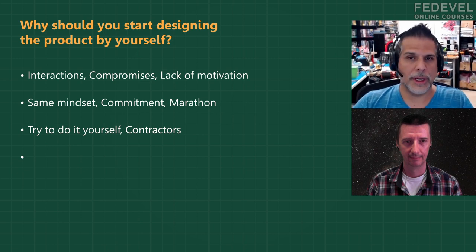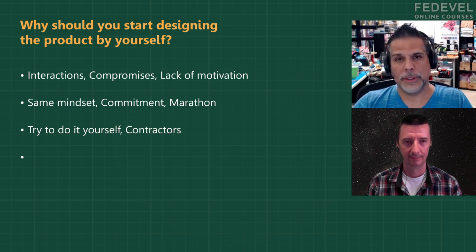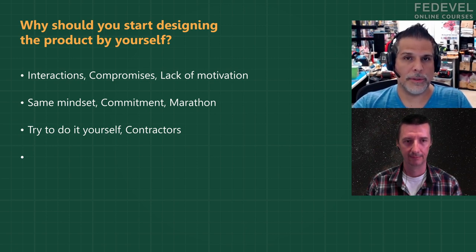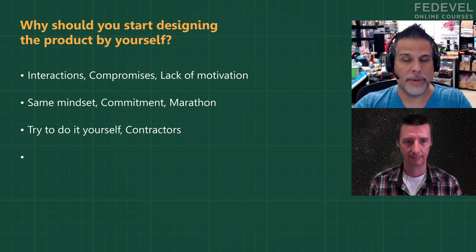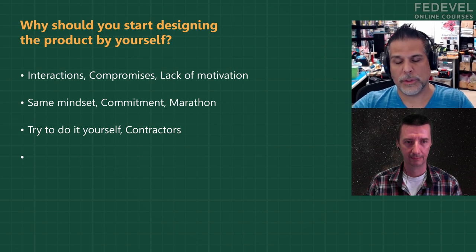If you need certain skill sets you don't have — maybe you're not good at doing video or 3D modeling — you can solve those problems with contractors. You need a contractor to design a case or make a video; that you can do. But if at all possible, when you're doing small-scale projects, it's always best to try and do it yourself because then you control everything and don't have to rely on anybody else.